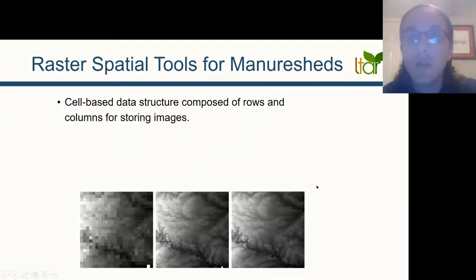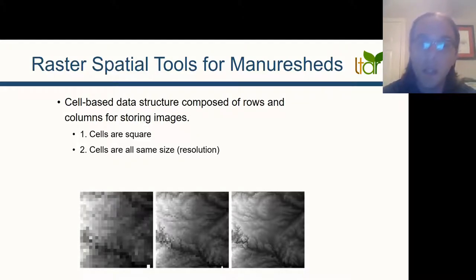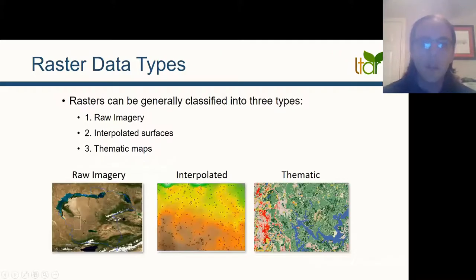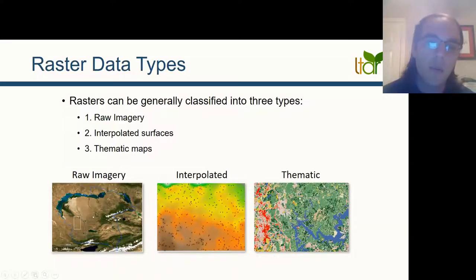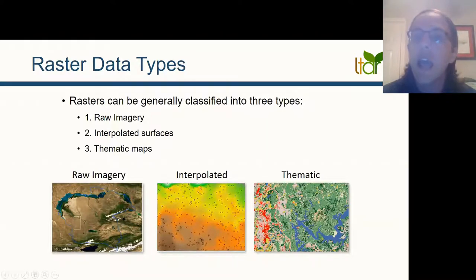We also use raster spatial tools for manure sheds. You can think of rasters as cells or squares — all the same size across the entire image or dataset — and the cells are homogeneous. We often call cells pixels, and you can think of a raster as a grid or image. There are three major types of rasters we utilize: raw imagery, interpolated surfaces, and thematic maps. Raw imagery is well known from tools like Google Maps; interpolated means we have point data and use averages or algorithms between given points to estimate what is probably happening between them.